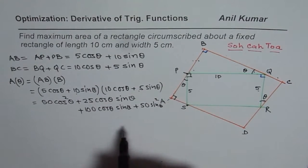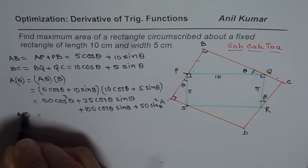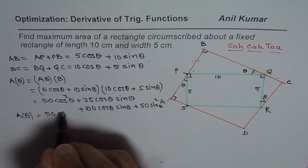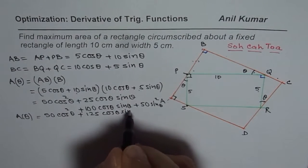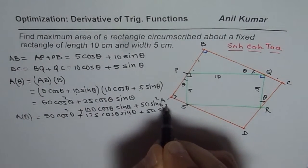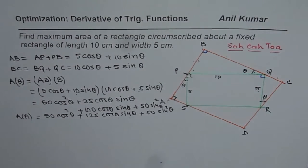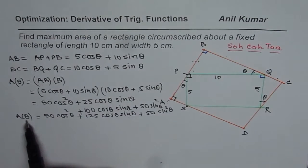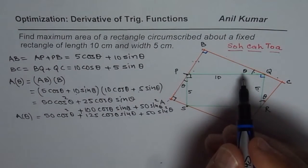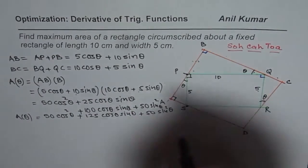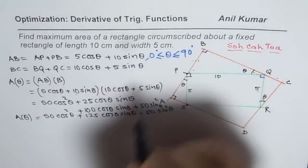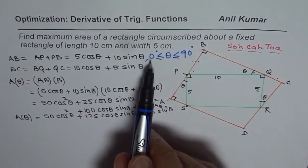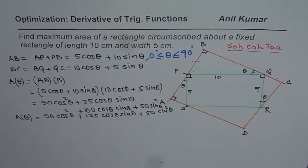Combining these terms: 50 cos squared theta plus 125 cos theta sin theta plus 50 sin squared theta. That is the expression for area. To maximize, we need to find the critical number. Theta is between 0 and 90 degrees, so the boundary conditions are theta greater than or equal to 0 and less than or equal to 90 degrees. We will check values for the boundary conditions as well as for the critical number.